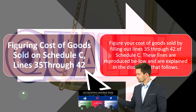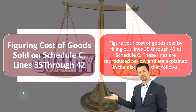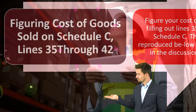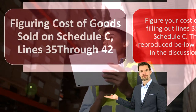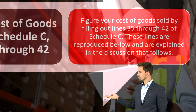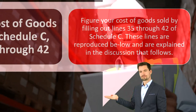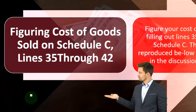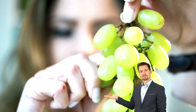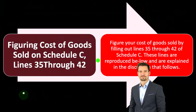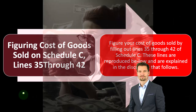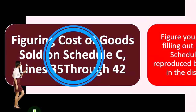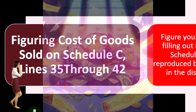Now we want to talk about figuring cost of goods sold on Schedule C. Cost of goods sold is only relevant if you're dealing with inventory. As a general rule, if you're a service business, you won't have inventory and won't typically have to deal with cost of goods sold. Cost of goods sold is the expense related to the consumption of inventory in order to generate revenue — under the matching principle, we match expenses to the period they were consumed. If you sell inventory as your primary form of revenue generation, cost of goods sold is typically the biggest and most important expense.